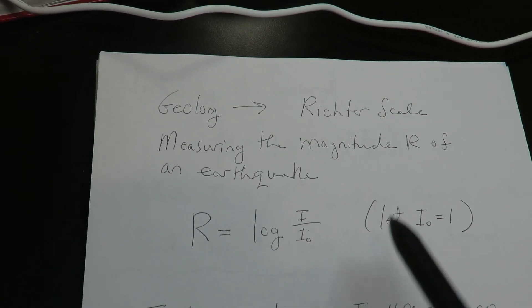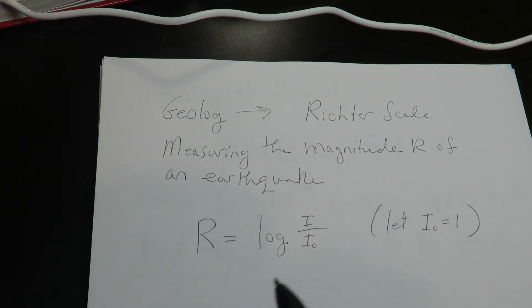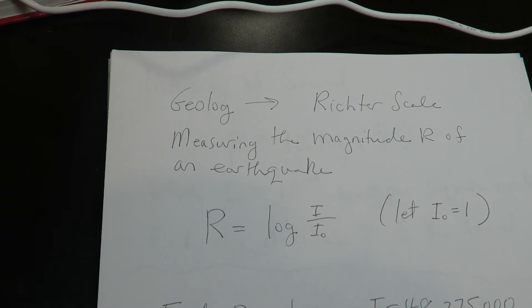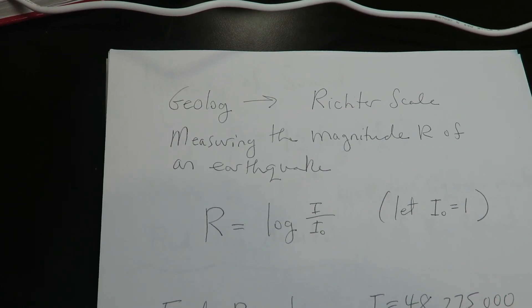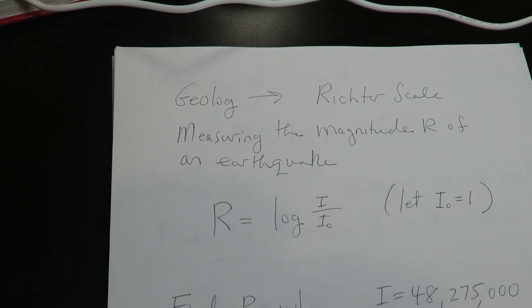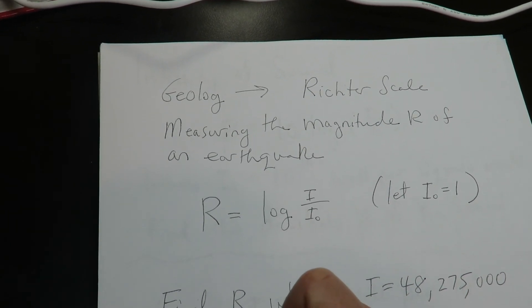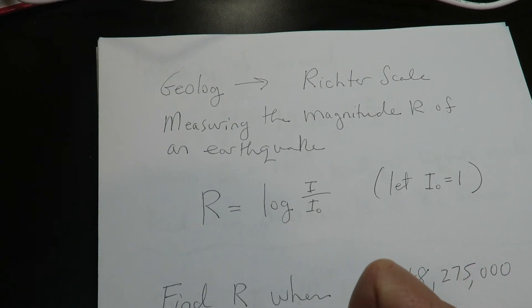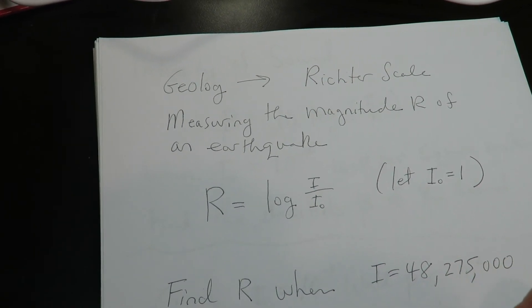and we're going to find R, which is the magnitude of an earthquake, when I is 48 million plus. So R is going to equal log of I, which again is given.